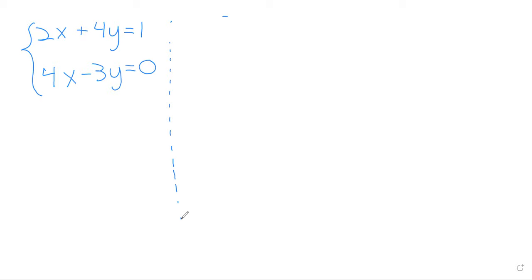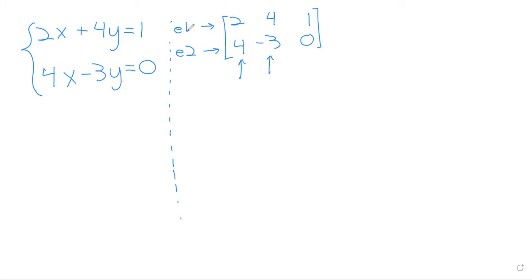The method is to store our system as an augmented matrix. In this augmented matrix, rows represent equations and columns represent variables, except for the last column, which represents equality. It's that last column that gives us the 'augmented' in the phrase 'augmented matrix' — you have the columns that represent variables, and then that other column stuck on at the end.